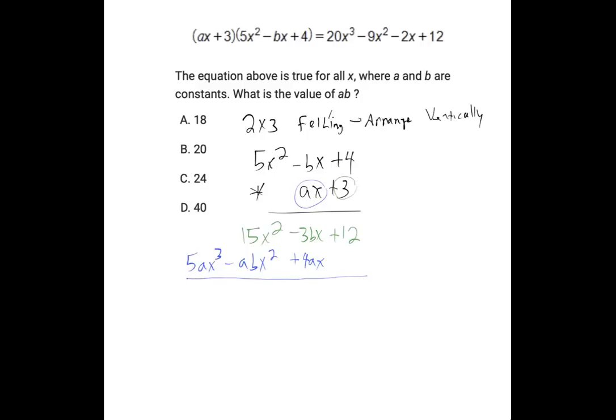Adding this all straight down, we have 5ax cubed plus 15 minus abx squared plus 4a minus 3bx plus 12.